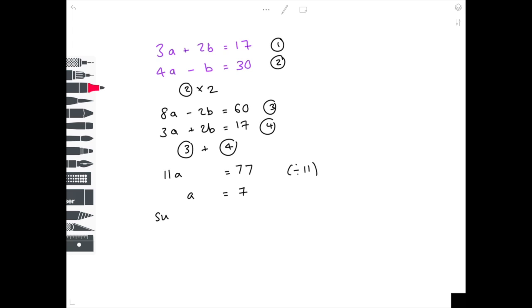We're going to substitute in a equals 7 into equation 1, and look, I like giving every single step I'm doing to make it nice and clear for the examiner and for myself so I don't get confused. So a is 7 plus 2b equals 17.